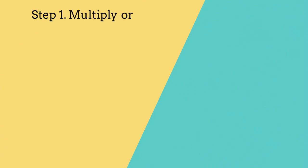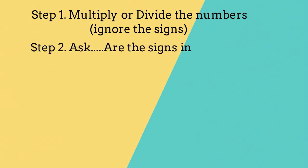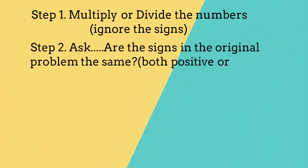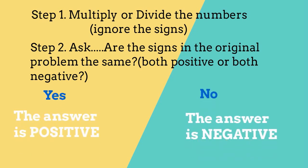Step 1 when multiplying integers is multiply or divide the numbers and ignore the signs. Step 2, ask are the signs in the original problem the same, both positive and negative? Yes, the answer is positive. No, the answer is negative.